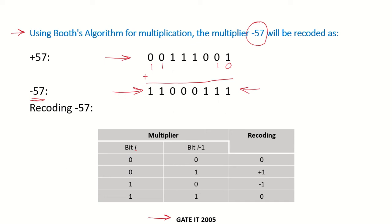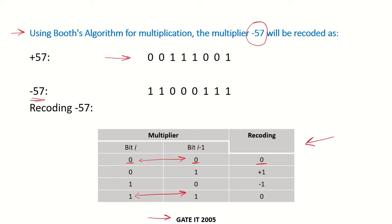How do we recode a multiplier using Booth's algorithm? You can check my lecture on Booth's algorithm. This is the table that is used: if bit i-1 is 0 and the current bit is also 0, the recoding will be 0. If both bits are the same — even 1 and 1 — recoding is 0. But if the preceding bit was 1 and the current bit is 0, recoding is plus 1; or if it changes from 0 to 1, recoding will be minus 1.